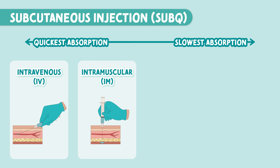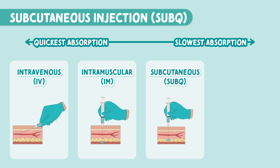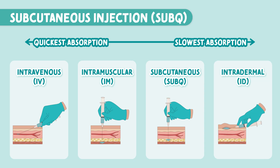Then we have our sub-Q. Absorption here is slower than IM, but perfect for medications that need a more gradual effect like insulin or anticoagulants. Finally, the slowest route is intradermal, or ID, where the medication is injected just beneath the surface of the skin.